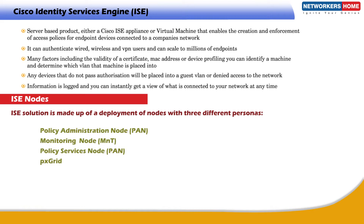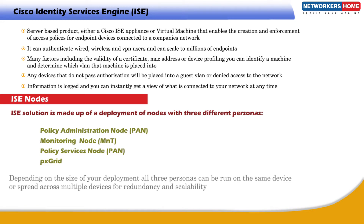The three personas are: Policy Administration Node, Monitoring Node, and Policy Services Node. There is also PX Grid. Depending on the size of your deployment, all three personas can be run on the same device or spread across multiple devices for redundancy and scalability.